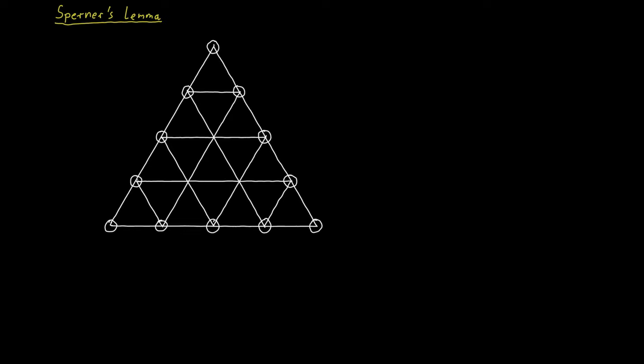And finally, we have the points in the interior of the large triangle, where some of the small triangles meet. In this example, there are three points here.